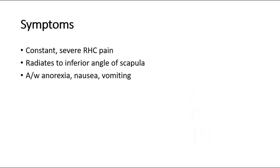The symptoms that the patient might have are constant and severe abdominal pain, especially at the right hypochondrium area. This is due to inflammation spreading to the parietal peritoneum. This disease is also associated with anorexia, nausea, and vomiting.